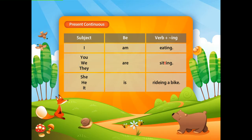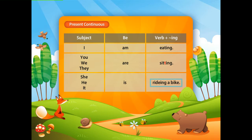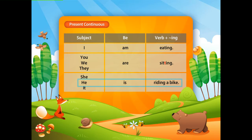Moreover, when the verb ends with an e, like 'ride,' you take out the e and add ing. For example, you change it from r-i-d-e to r-i-d-i-n-g. An example would be: he is riding a bike.